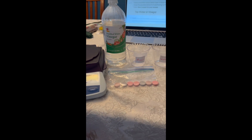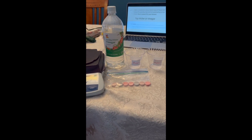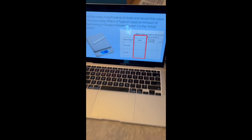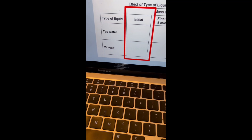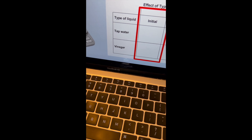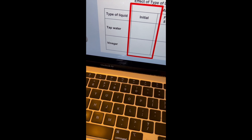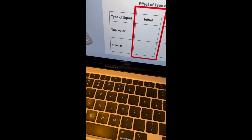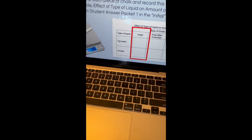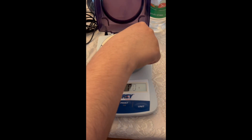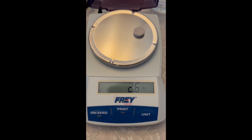Let's see the weathering rates — let's see how fast. We're going to find the initial masses of two tablets: one going into tap water, which represents normal water, and one going into vinegar, which represents acid rain. Acid rain is when water in the air mixes with carbon dioxide to create a weak acid — carbonic acid, H2CO3.